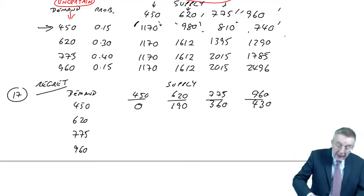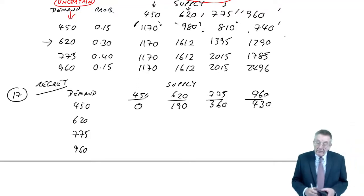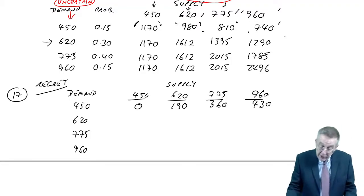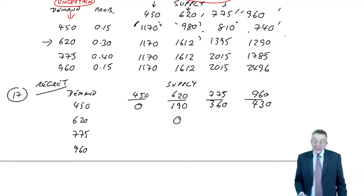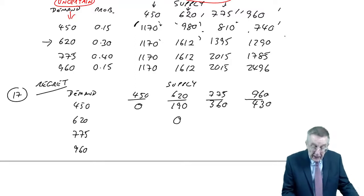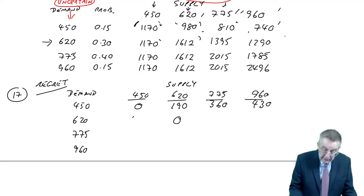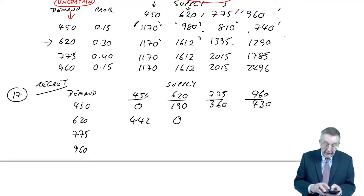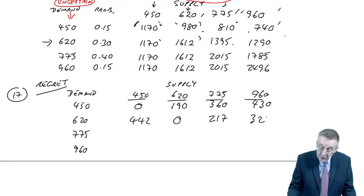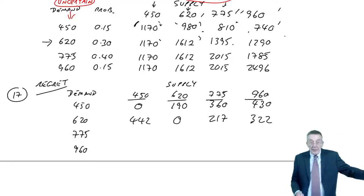And the same for each of them. If demand turned out to be 620, the best course of action would have been to supply 620 and get 1612. So if you'd have supplied 620, no regret. What about the others? If you'd supplied 450, you've only got 1170, as against 1612. And so the regret, 442. 1395, as against 1612, 217. 1290, as against 1612, 322.